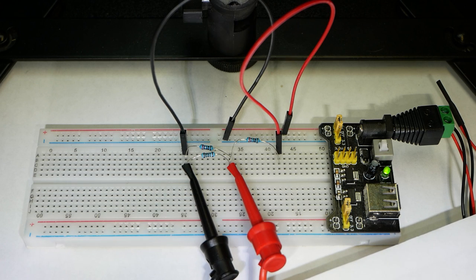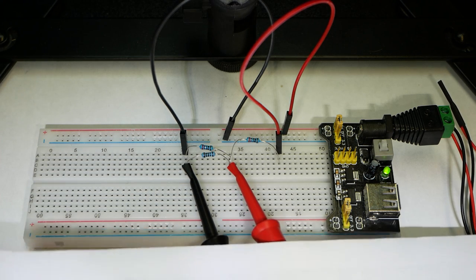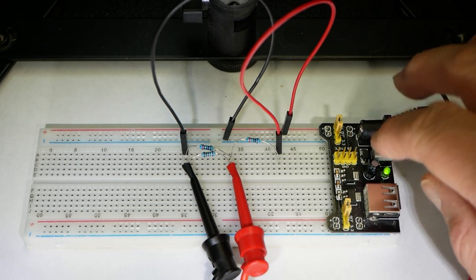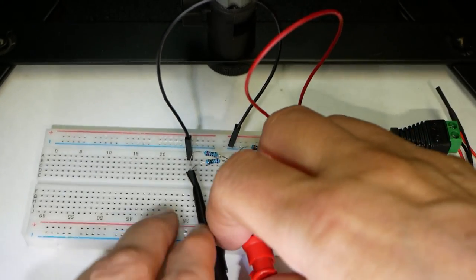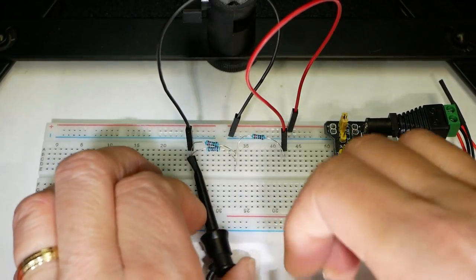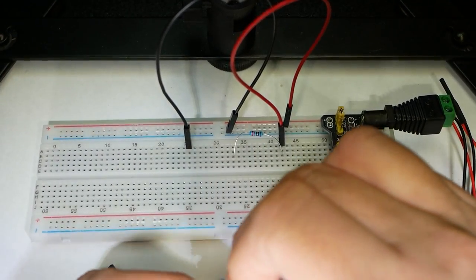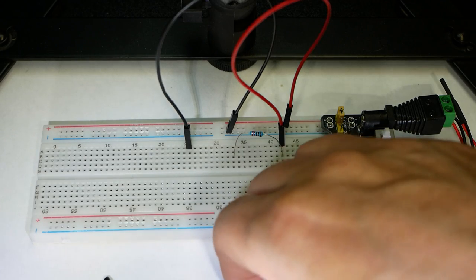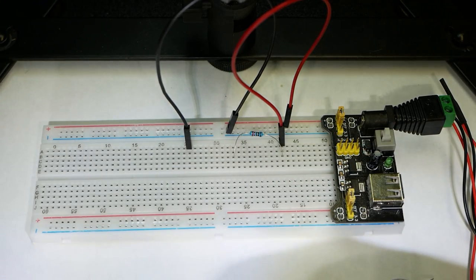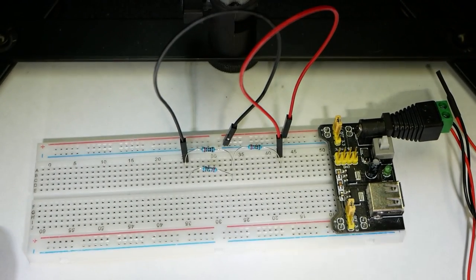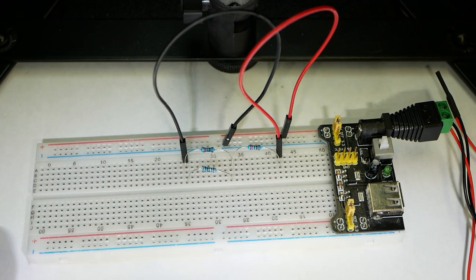Okay, 2.43. Oh, it's 1 kilo ohm. Switch out to another load. So now we have the 220 in place.